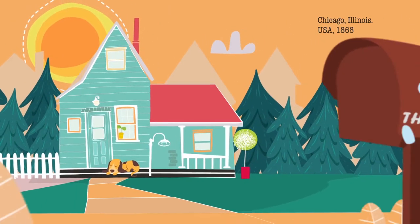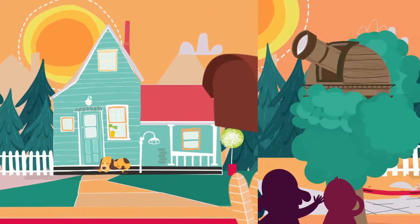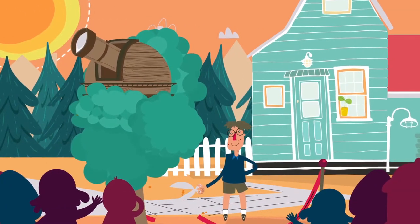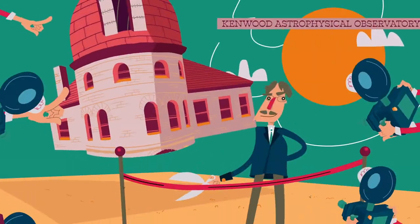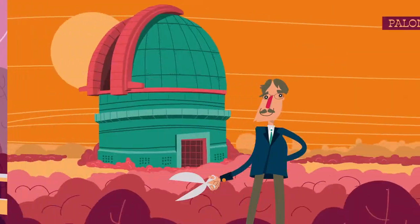Nel 1868 a Chicago nacque George Ellery Hale, un astronomo che rivoluzionò la nostra conoscenza delle macchie solari. Hale progettò e costruì negli Stati Uniti d'America molti grandi telescopi.